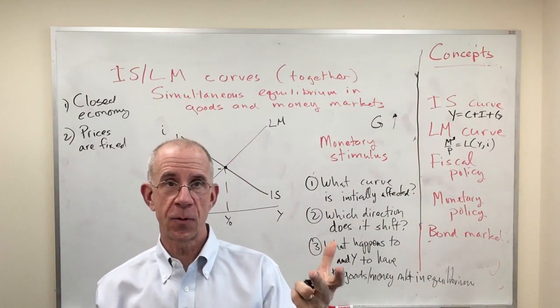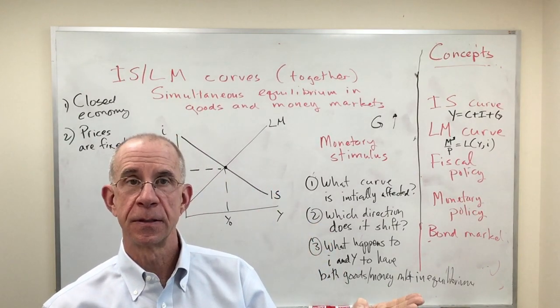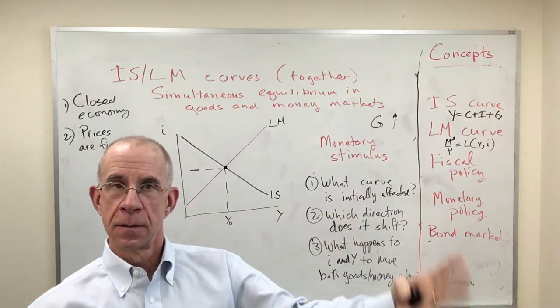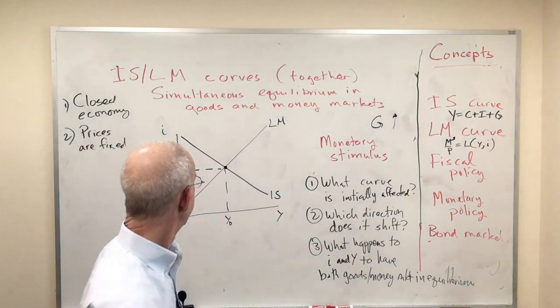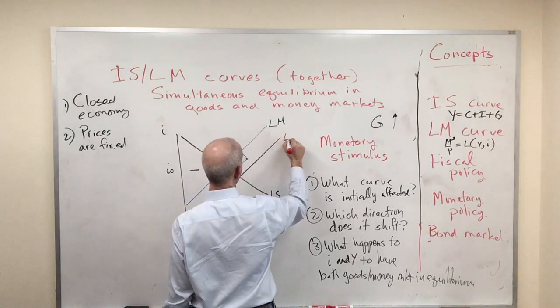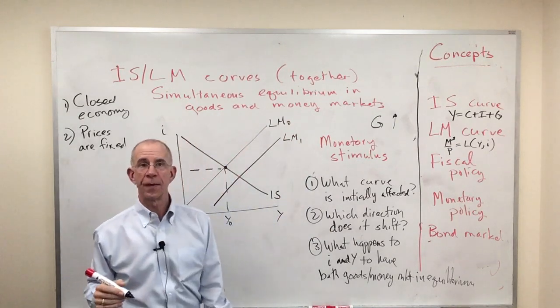Go back and look at the video about the LM curve, which you'll see is that the increase in money in circulation shifts the LM curve out.